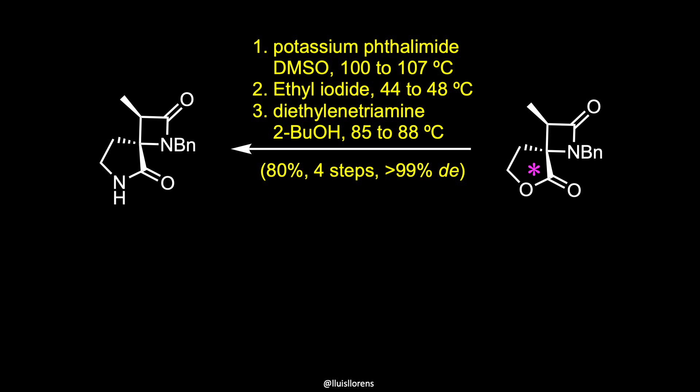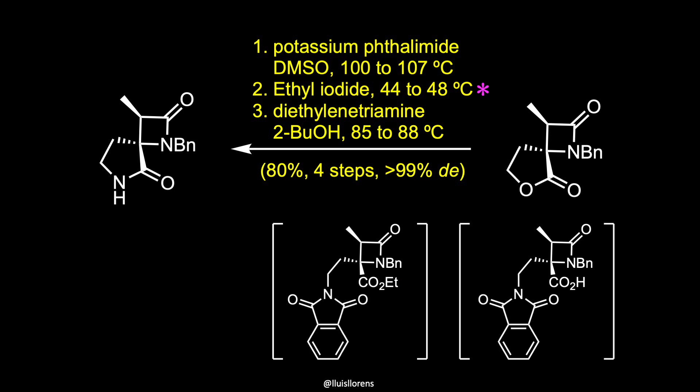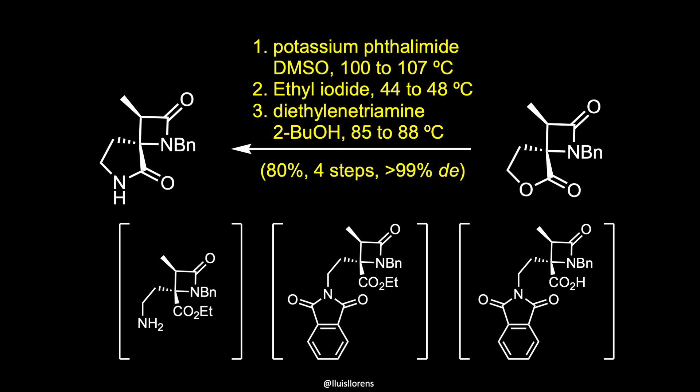The lactone ring is then opened by an attack of potassium phthalimide on the gamma carbon. The resulting carboxylic acid is converted to the ethyl ester by treatment with ethyl iodide. Finally, treatment with diethylenetriamine releases the phthalimide, providing a free amine for subsequent cyclization to the desired spirolactam via the corresponding ethyl ester intermediate. The sequence allows for the formation of the spirolactam in 80% yield over four steps and over 99% diastereomeric excess after recrystallization.